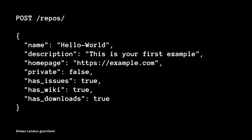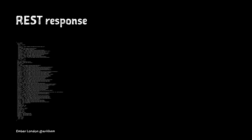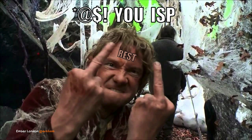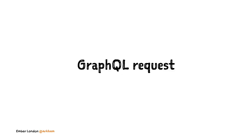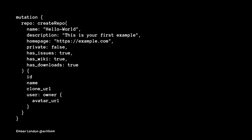Going back to an example — I'm using a totally random service where you can post repos to. I send a REST request to create a new repo, and the payload I get back has so many fields you can barely read it — lots of URLs and owner information. But if you think about a GraphQL request, I'm creating a mutation, creating a repo with name, description, homepage, private, has-issues, has-wiki, downloads, and I only want back the ID, name, clone URL, and avatar of the owner — assigned to a 'user' field.